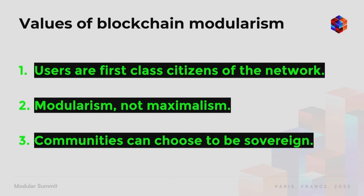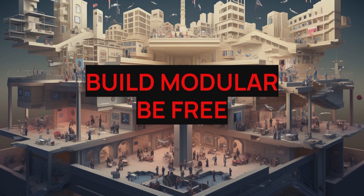To recap the three values of blockchain modularism: first, users should be first-class citizens of the network by focusing on light nodes and allowing people to run them. Second, modularism and non-maximalism — because we need to escape the monolithic layer-one loop, otherwise crypto will never grow up. And finally, communities can choose to be sovereign because they have the right to fork if they want to. I really hope you enjoy the conference and a lot of interesting conversations happen — I'll be around along with many of the Celestia team and other teams in the ecosystem. Thank you.